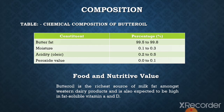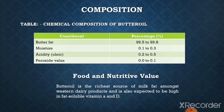This table shows the chemical composition of butter oil. Butter fat is present in the range of 99.5 to 99.8 percent. Moisture of butter oil is in the range of 0.1 to 0.3 percent. Acidity of the butter oil, expressed as oleic acid, is in the range of 0.2 to 0.5 percent, while the peroxide value of butter oil is 0.02 to 0.5 percent.